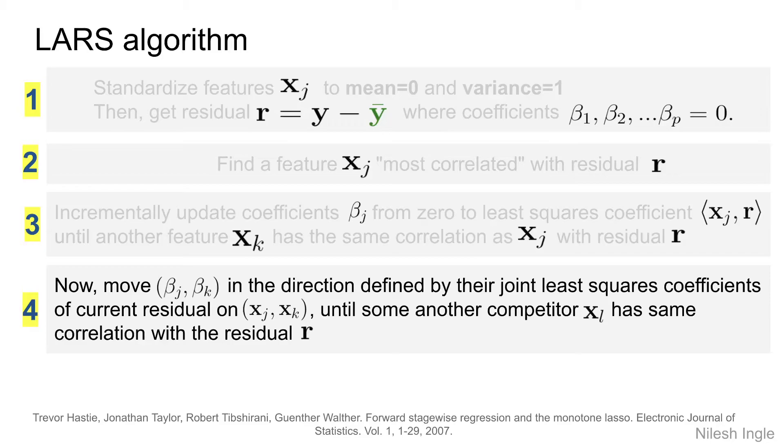The current residuals are based on xj and xk. The direction in which we move here is the direction that bisects through the space—it bisects the angle between those two features. It moves in equiangular direction, and that's what least angle regression is about.